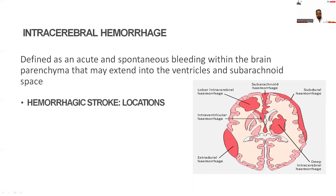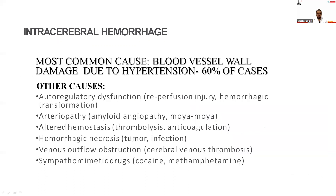Intracerebral hemorrhage is defined as spontaneous bleeding within the brain parenchyma that may extend into the ventricles and subarachnoid space. Depending on the location, it is called deep cerebral intracerebral hemorrhage, lobar intracerebral hemorrhage, intraventricular hemorrhage, subarachnoid hemorrhage, subdural hemorrhage, or extracranial hemorrhage.